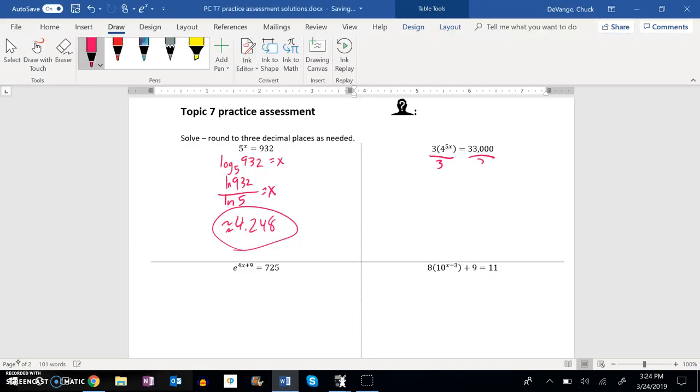So first thing I'm going to do is divide both sides by 3, and if I notice, if I do that, I get 4 to the 5X is about 11,000.